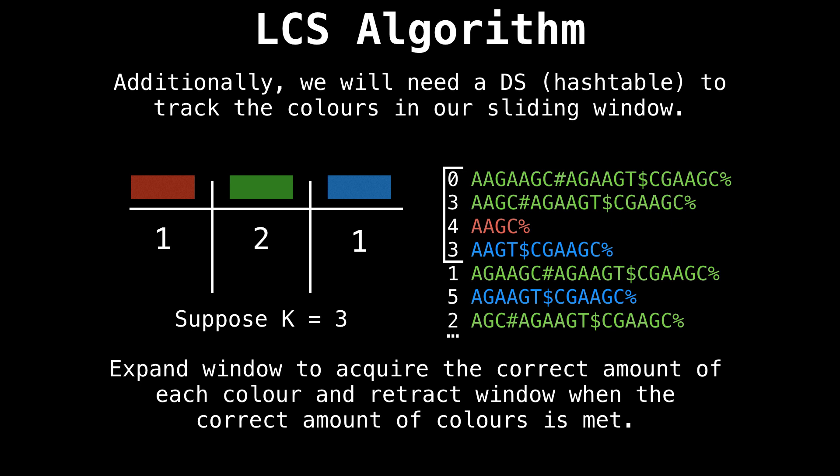So let's expand our window downwards to capture some blue. Now we have enough blue and enough of each color to do a valid query. When we perform the query, we would see that the longest common substring for the window we are in will have length three representing the string AAG.